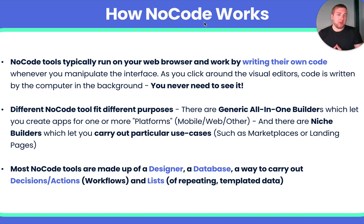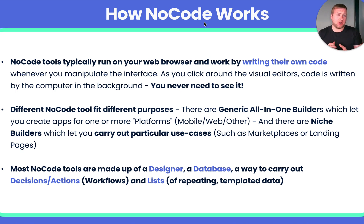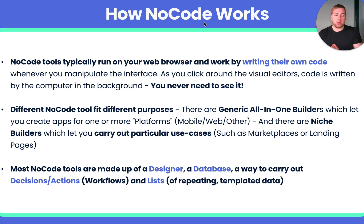Different NoCode tools fit different purposes. There are two main umbrellas: the first is a generic all-in-one builder — an app builder that lets you build for one or more platforms like mobile or web, with very little restriction. It's just like a big blank page that says go and build whatever you like. On the other hand, you get niche builders which let you carry out some particular use case, like building an online shop.